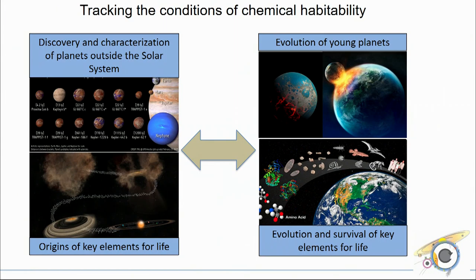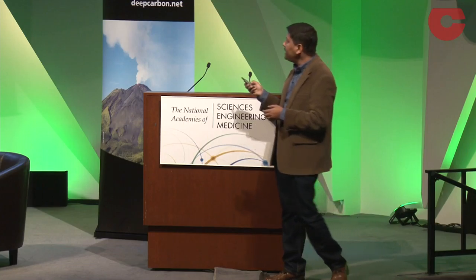We are taking the approach of tracking the conditions of chemical habitability for our own planet across all solar system bodies, as well as going beyond the solar system for exoplanets. We are trying to understand the conditions of chemical habitability — from the initial discovery and characterization of planets outside the solar system, to understanding the origins of key elements of life in the protoplanetary disk, and then how the evolution of young planets affects the availability of these elements as they form from planetesimals to planetary embryos to larger planets.